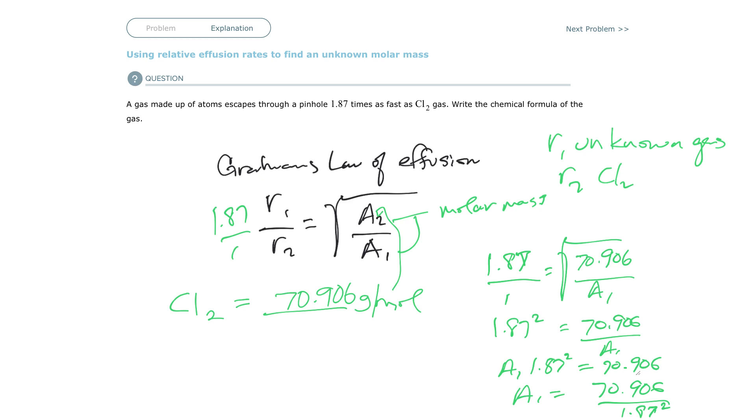So I'm going to divide twice. So I have 70.906 divided by 1.87 divided by 1.87. And I've got A1 equals 20.28.